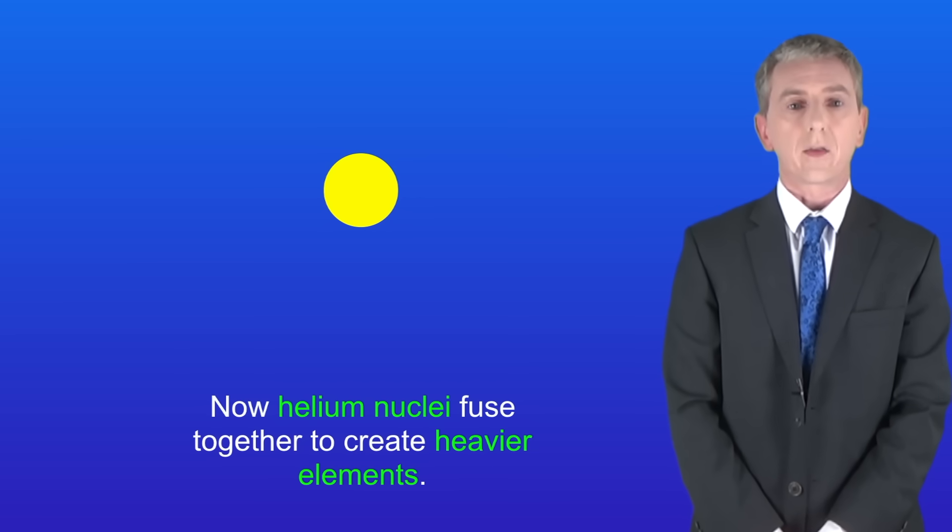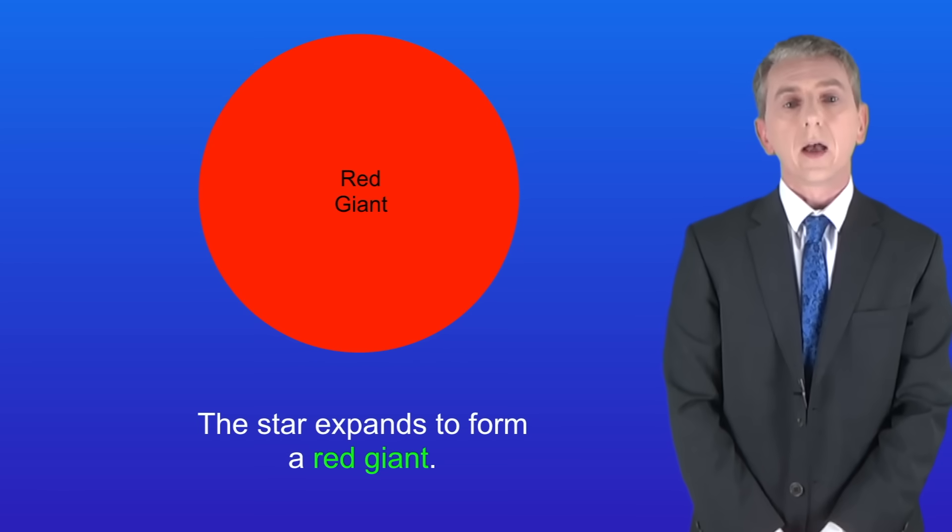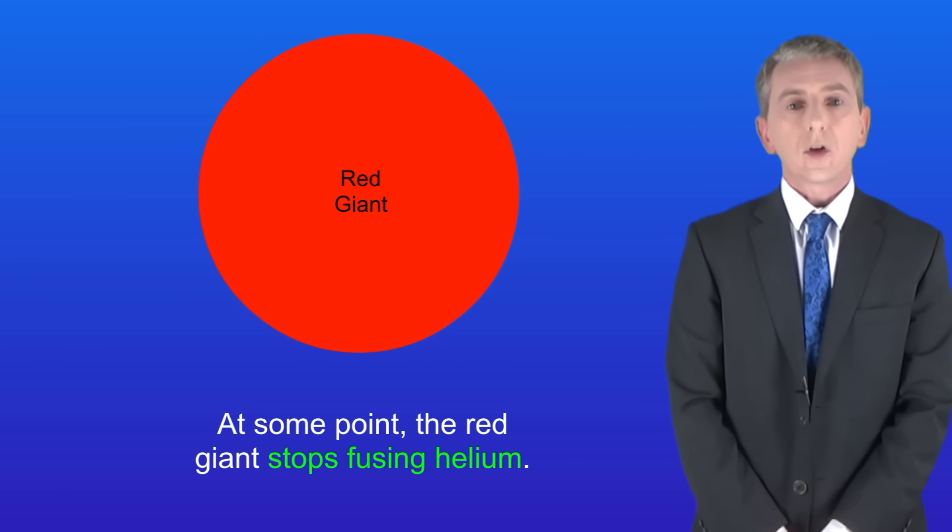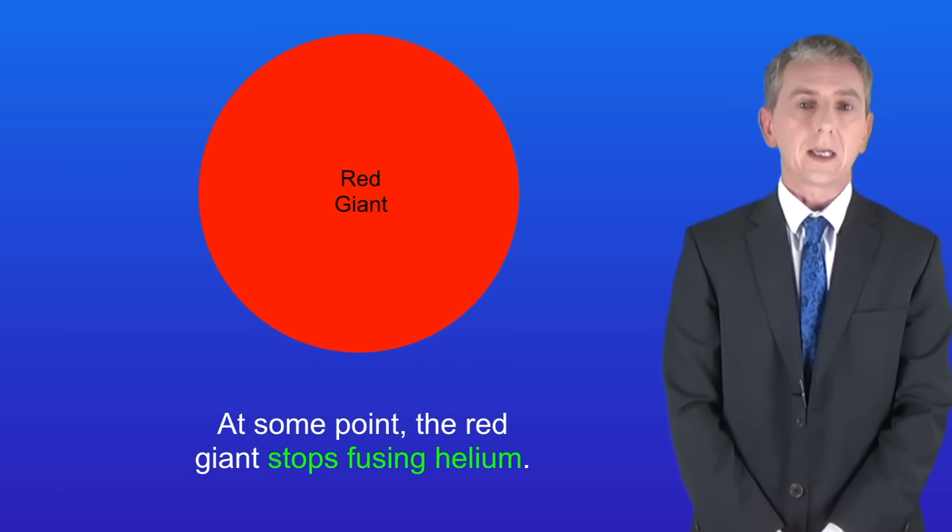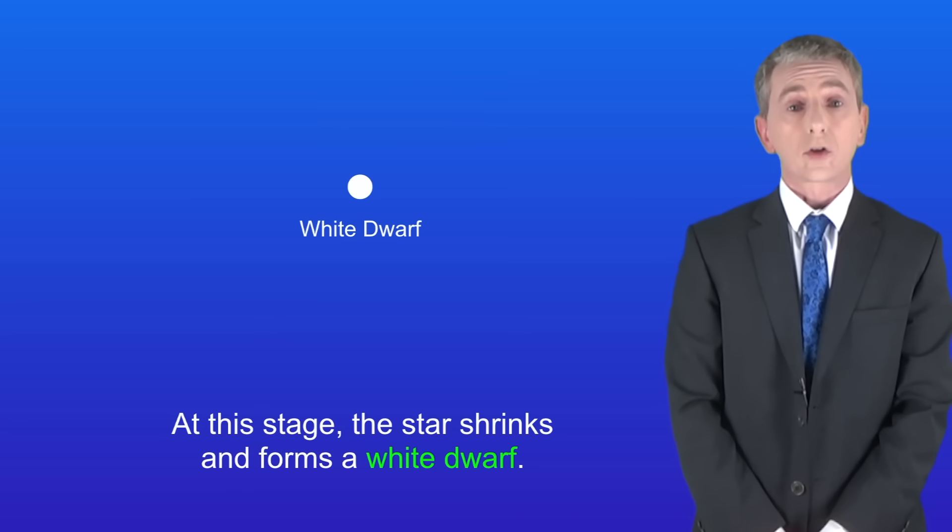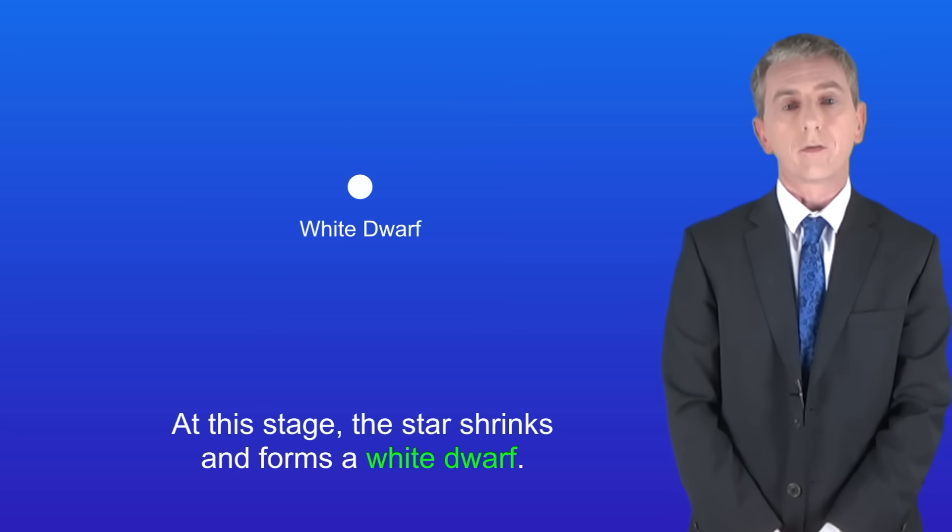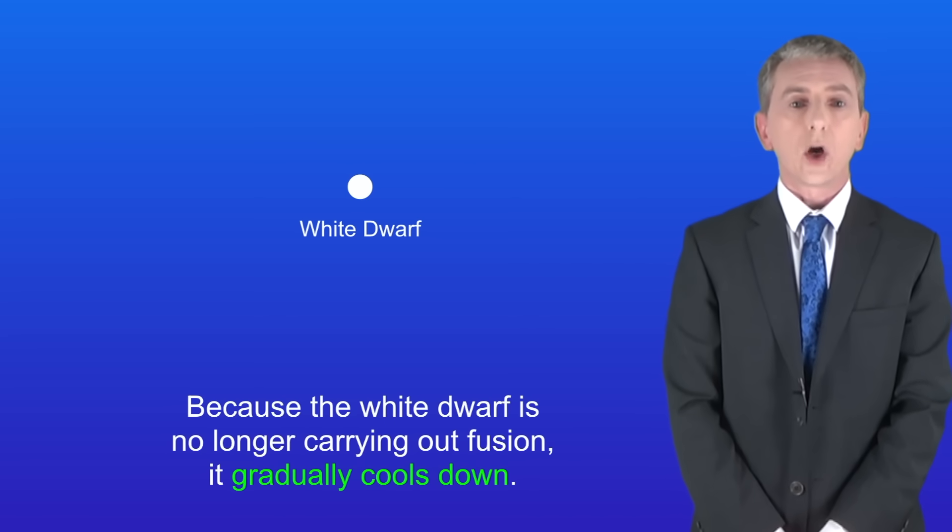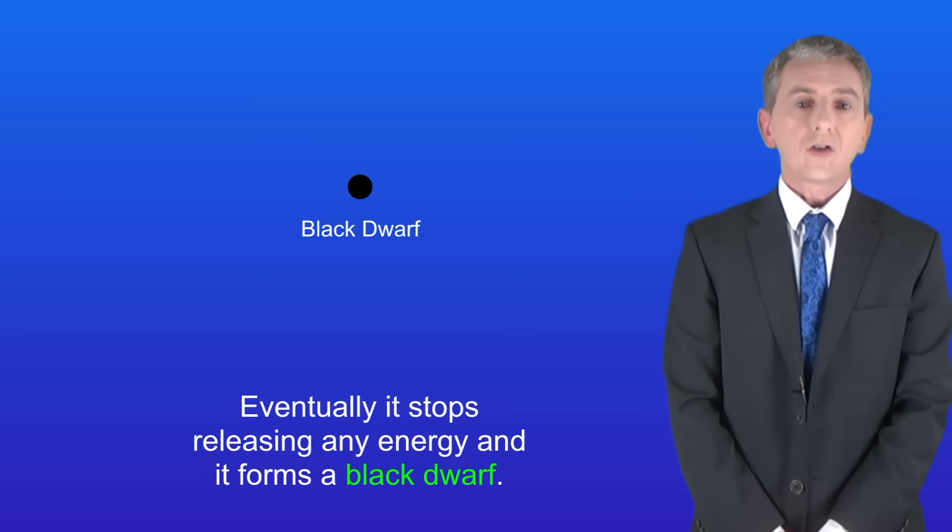Helium nuclei fuse together to create heavier elements, and the star expands to form a red giant. At some point the red giant stops fusing helium and shrinks to form a white dwarf. Because the white dwarf is no longer carrying out fusion, it gradually cools down. Eventually it stops releasing any energy and forms a black dwarf.